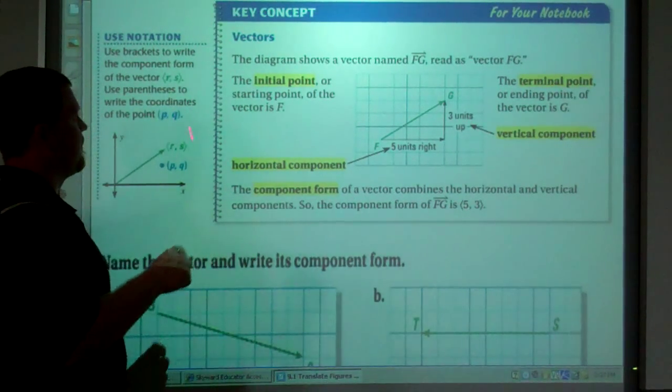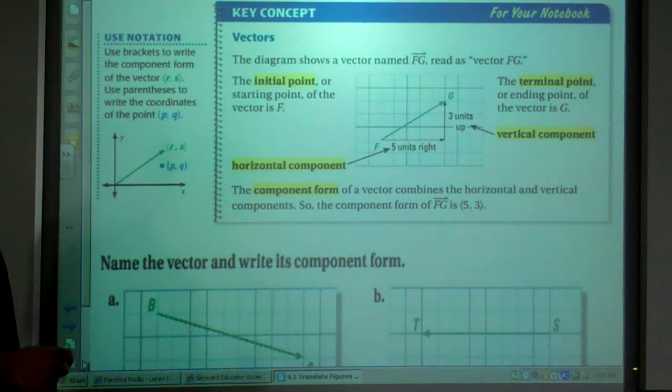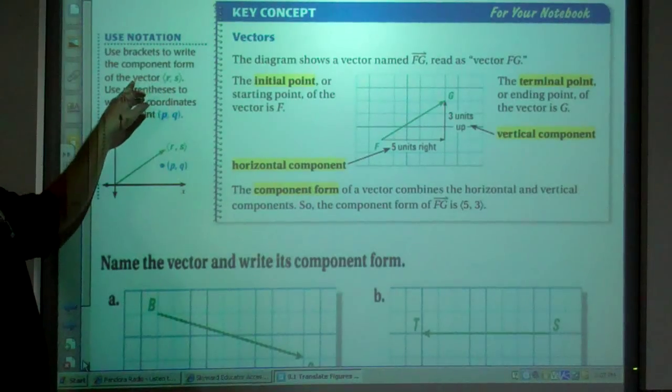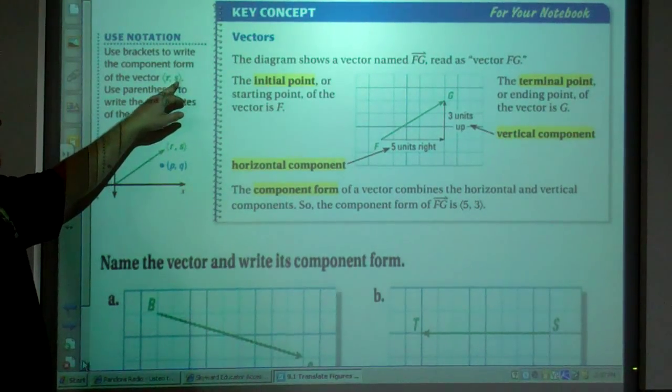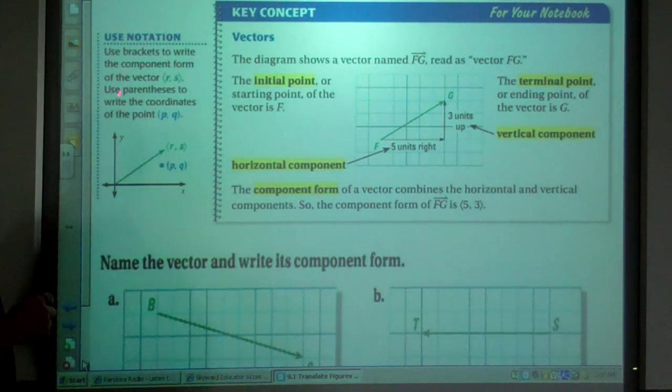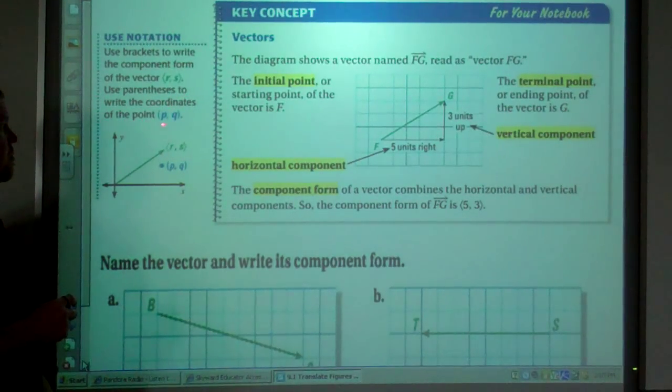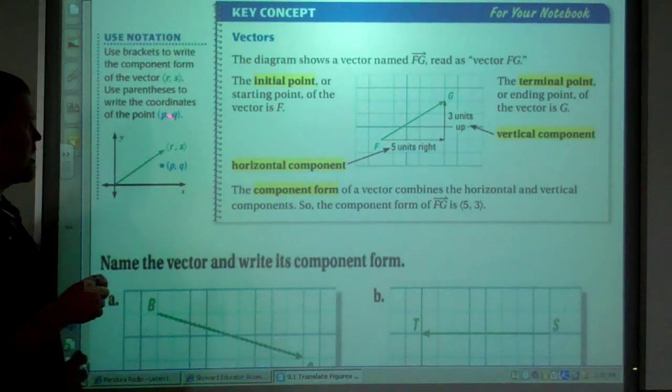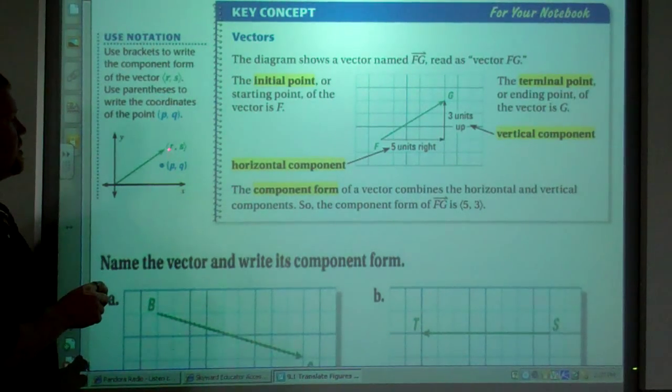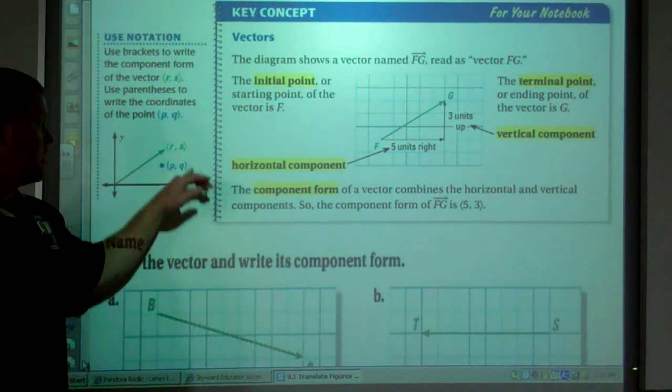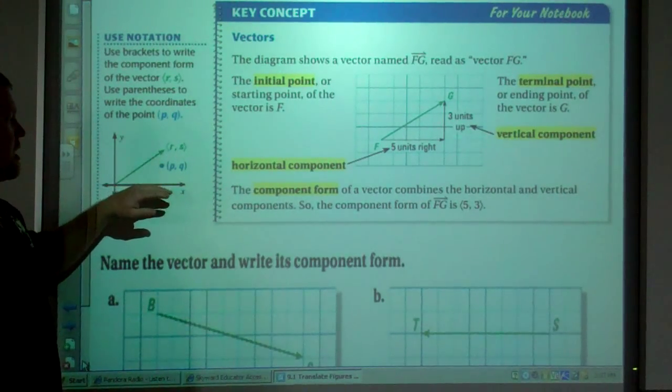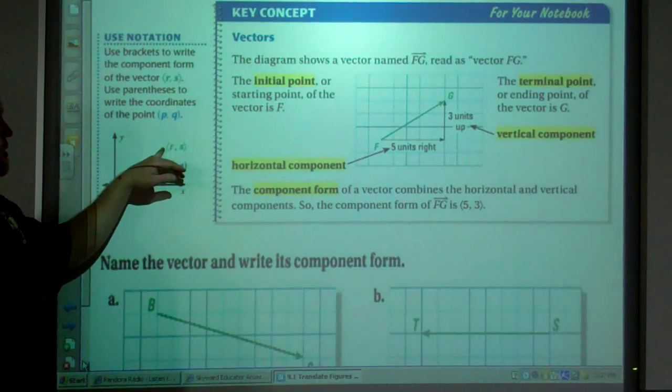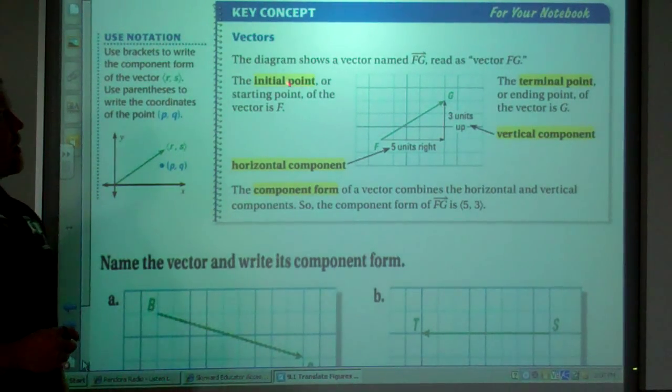Now here's talking about vectors. Component form. Use brackets to write the component form of the vector R, S. Use parentheses to write the coordinates of the point P, Q. So when you're writing a point, you use parentheses. When you're talking about a vector, you use the brackets. So you gotta know the difference. Are we talking about a point? We should be using parentheses then. If we're talking about a vector, we should be using brackets.